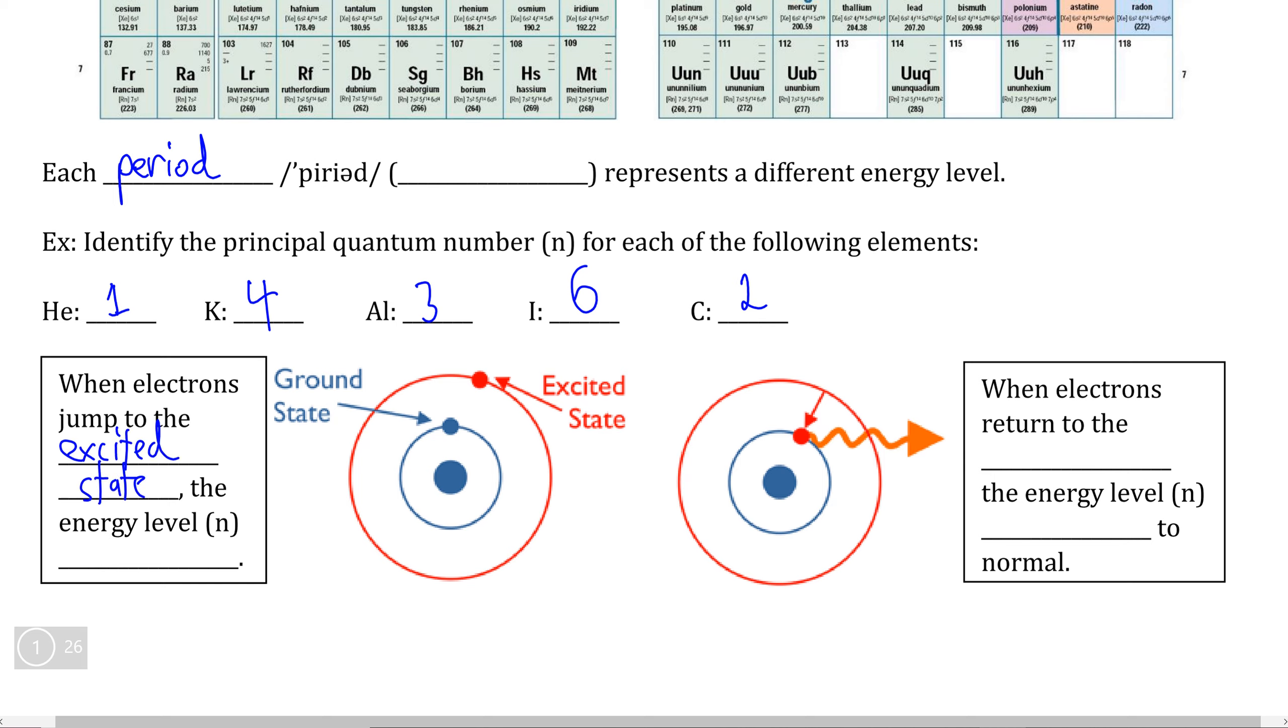We can see that they jump from a lower energy level up to a higher energy level, like so, which means that the energy level of the electron increases, because it's farther away from the nucleus than it used to be.